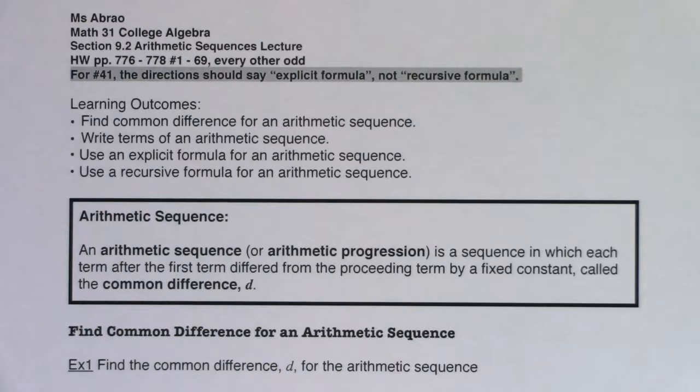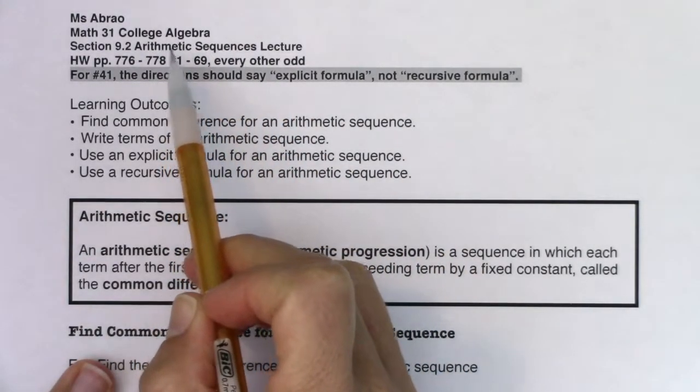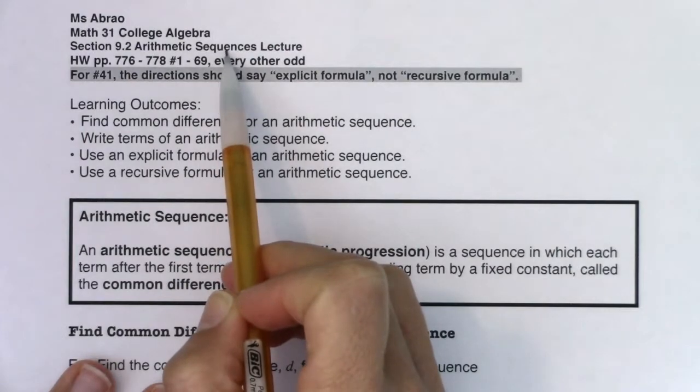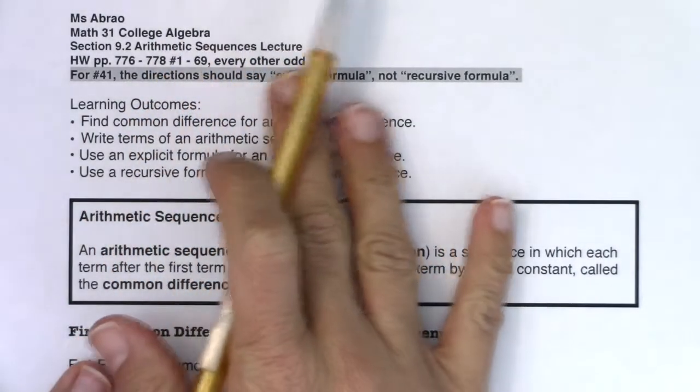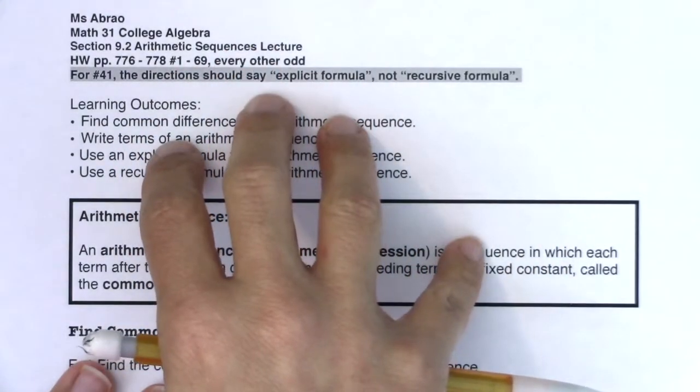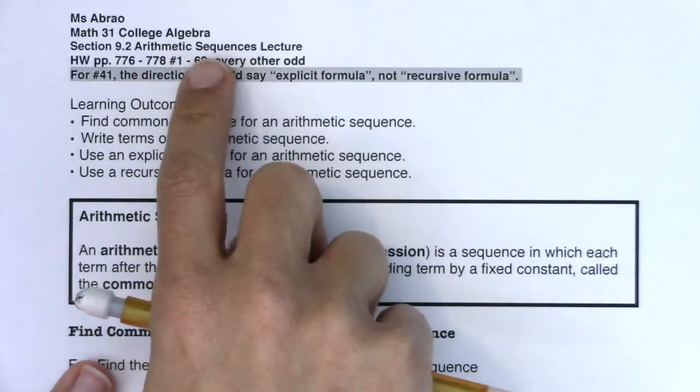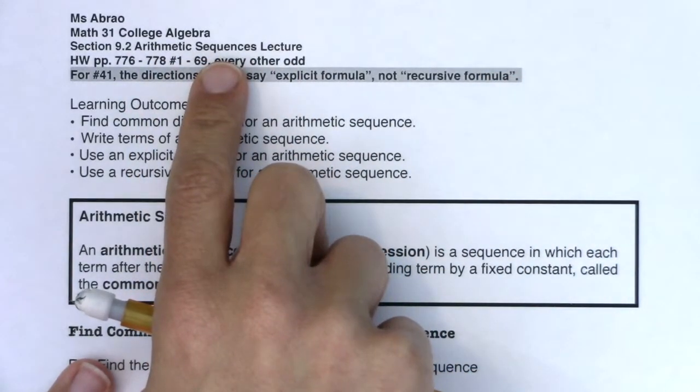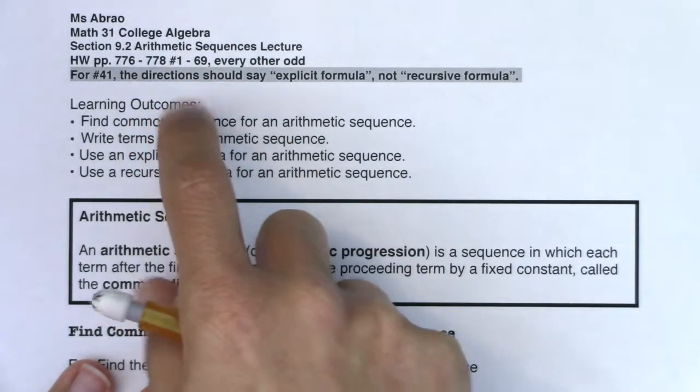Hey, Math 31. Welcome to section 9.2. Here's where we are going to look at a very specific type of sequence called arithmetic sequences. So we did sequences in general in section 9.1. We looked at explicit formulas and then recursive formulas. And now with these lists of numbers, these sequences that we're making that have a pattern, we're going to look at a specific kind in section 9.2 called arithmetic.